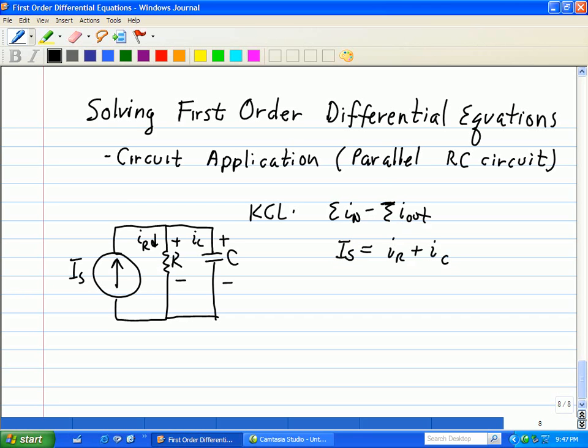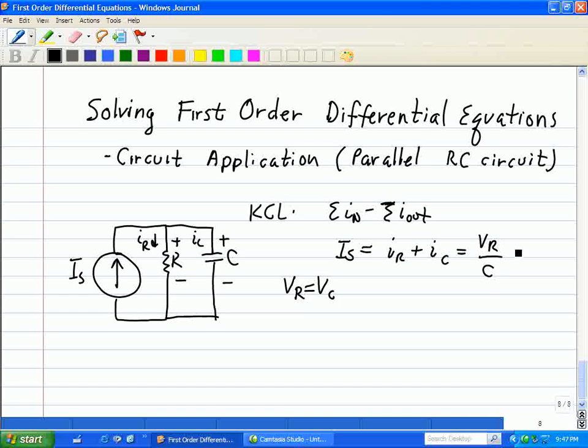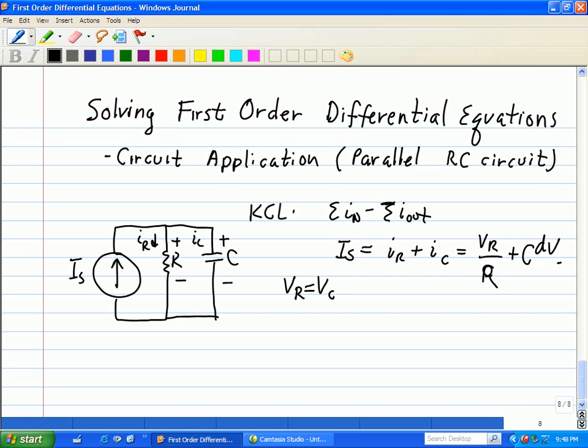Now we note that the voltage across the capacitor and the voltage across the resistor are equal. So we can substitute, in this case, VR divided by R, and then our current IC is C dV dt.